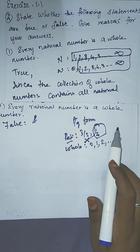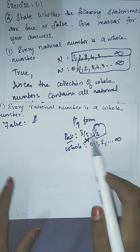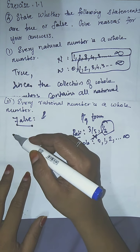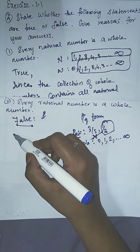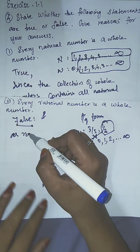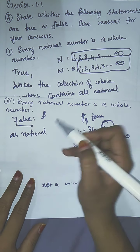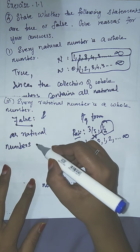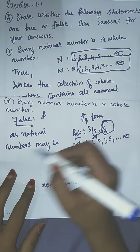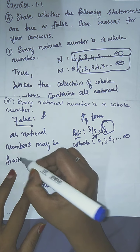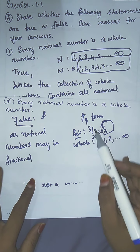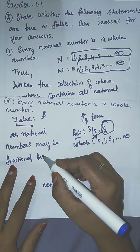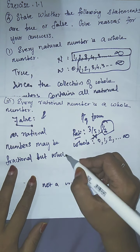A rational number will not be a whole number. The reason is: rational numbers may be fractional — like 3/5 or 1/2 — and such fractional values are not whole numbers, which are all positive integers.